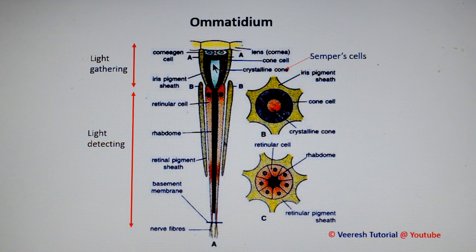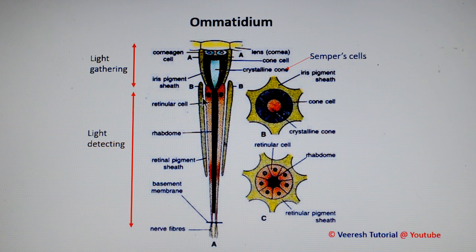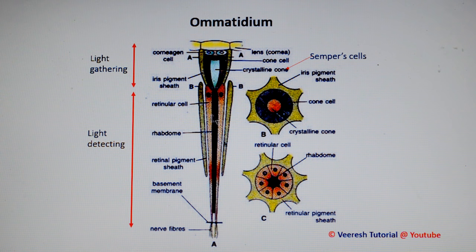Below the corneal lens is the crystalline cone, secreted by semper cells, flanked by two primary pigmentary cells. Below the crystalline cone is the rhabdom, and on the other side of the rhabdom are retinal cells, surrounded by secondary pigmentary cells. When light enters the corneal lens, the retinal cells — which contain light-sensitive photoreceptors — detect the wavelength of light. The light-sensitive region of retinal cells is the rhabdomere, which contains the light-detecting pigment rhodopsin. Each ommatidium is functionally isolated from others by the secondary pigmentary cells.